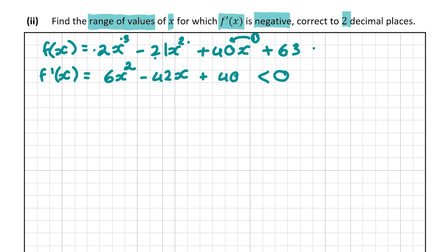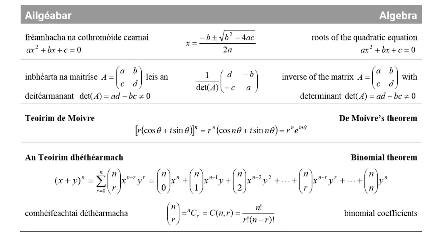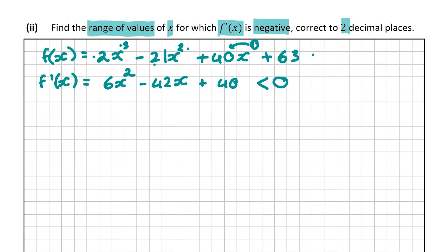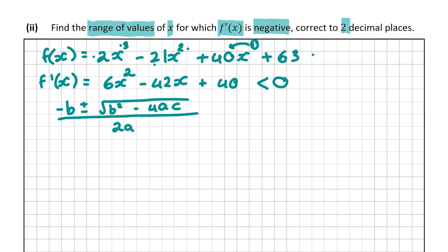It says correct to two decimal places — the most obvious hint that we'll use the minus b formula. From our log tables page 20, the quadratic formula is: x equals minus b plus or minus the square root of b squared minus 4ac, all over 2a. Here a is the coefficient of x squared, b is the coefficient of x, and c is the constant term. So a is 6, b is minus 42, and c is 40.